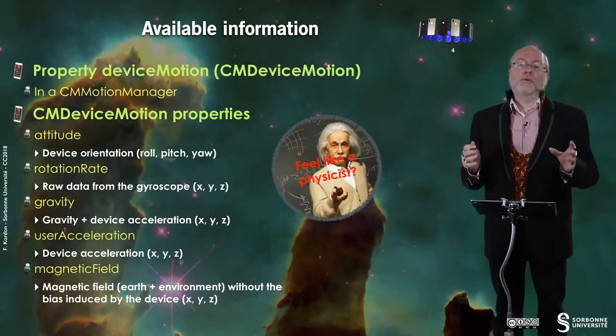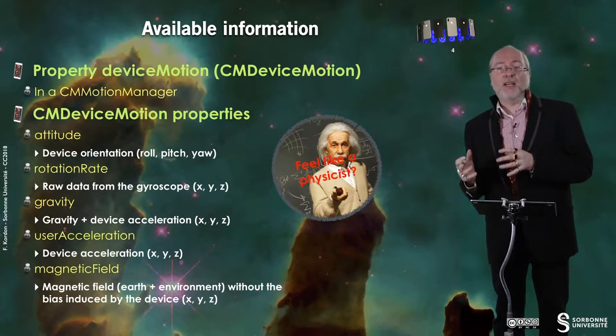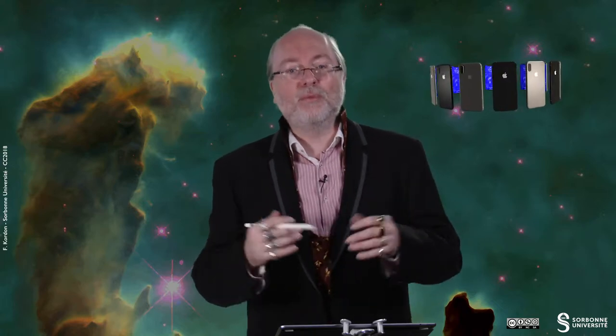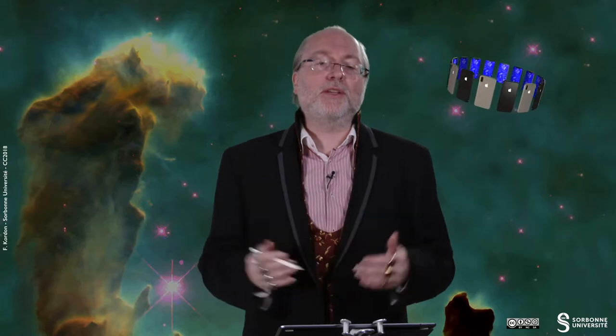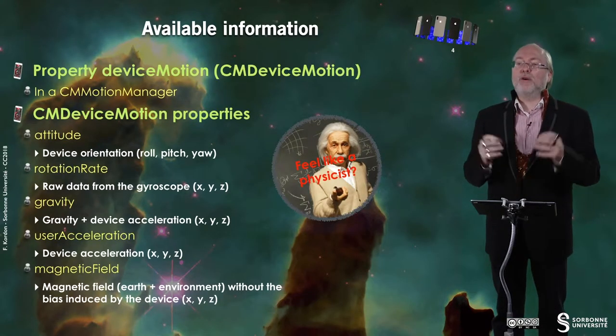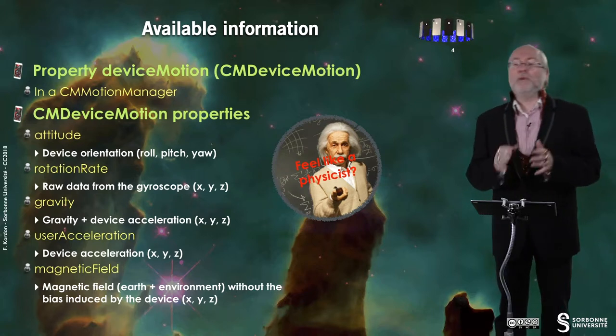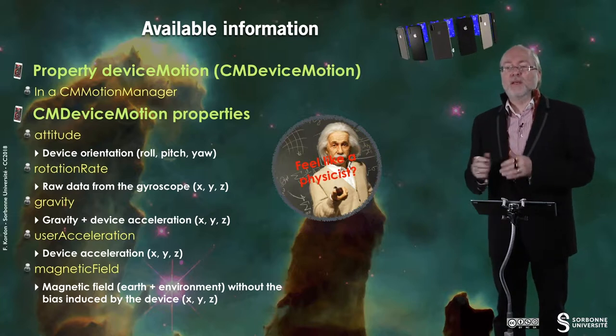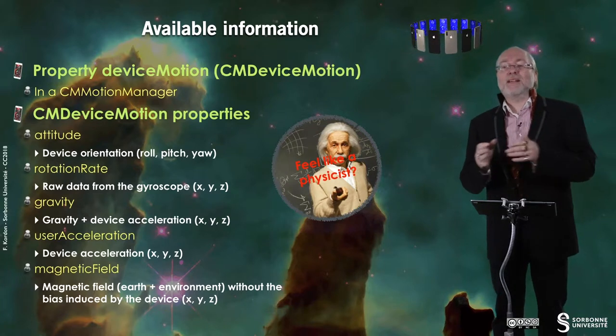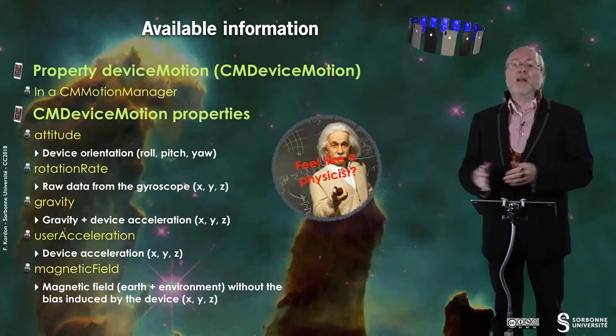You have some available information. Everything is handled in a similar way but the attributes are not the same. From a property called deviceMotion of type CMDeviceMotion, located in a CMMotionManager, you can get several interesting properties. The attitude provides information about device orientation: roll, pitch, and yaw. Then you get rotation rate — raw data from the gyroscope on X, Y, Z. Then gravity, and gravity plus device acceleration on X, Y, Z. You also have user acceleration — device acceleration along the three axes — and finally the magnetic field, which comes from the magnetometer.